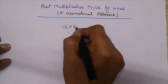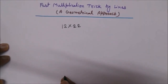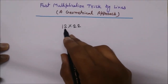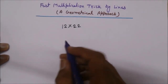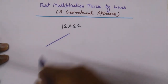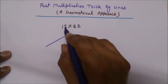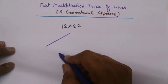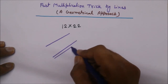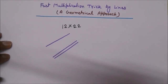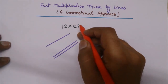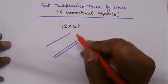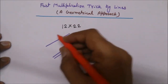Let's take 12 and 22. As you can see, 12 has two digits: 1 and 2. For the multiplication, first of all draw a single line, then draw two lines. Now focus on the second number — it also has two digits: 2 and 2. So first draw two lines for this 2.